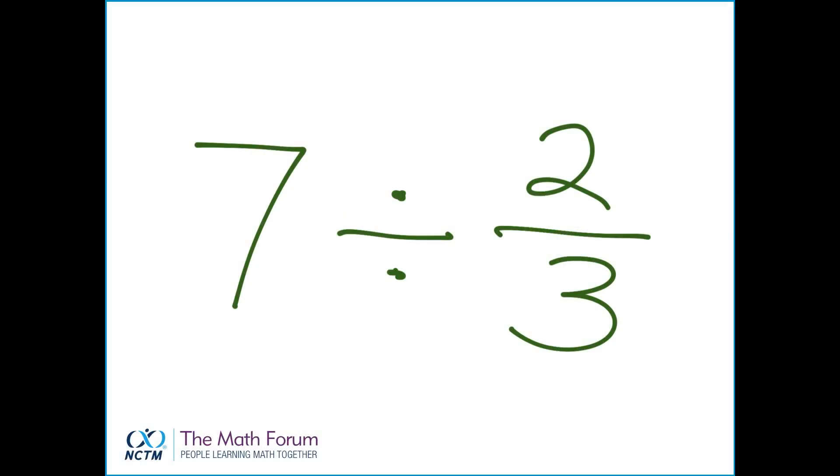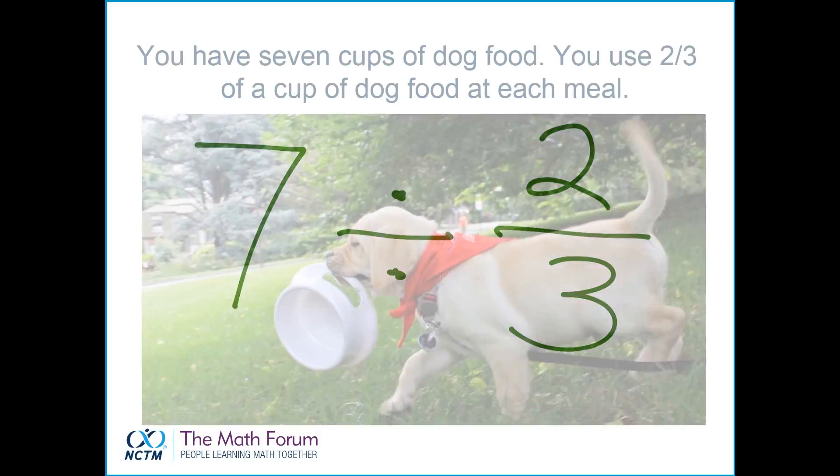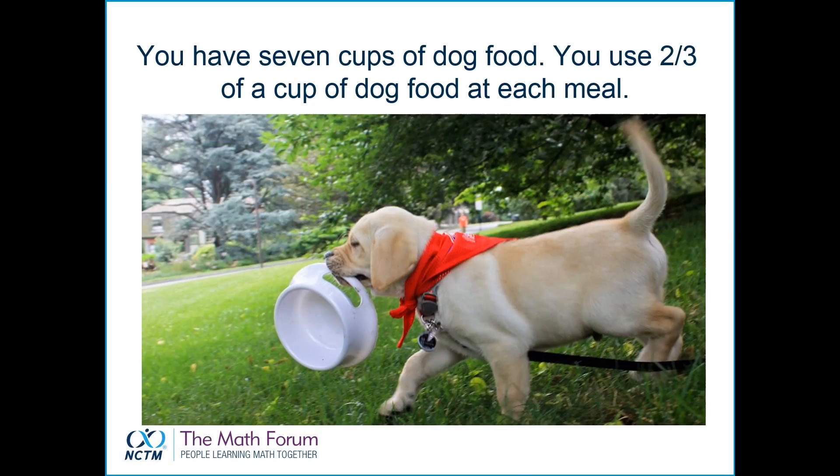So you want them to divide numbers. A nice way to do that is to give them a context around division. Instead of just the problem, let's have a story that involves that — it doesn't hurt to have a puppy. They'll come up with informal methods to actually answer the question, and you can get to the procedure down the line, but they'll have done the part that's important.